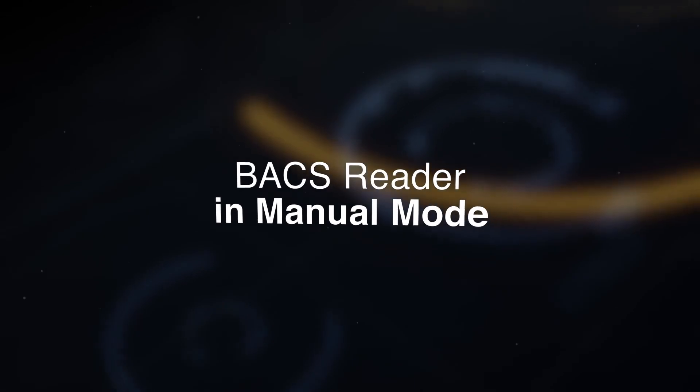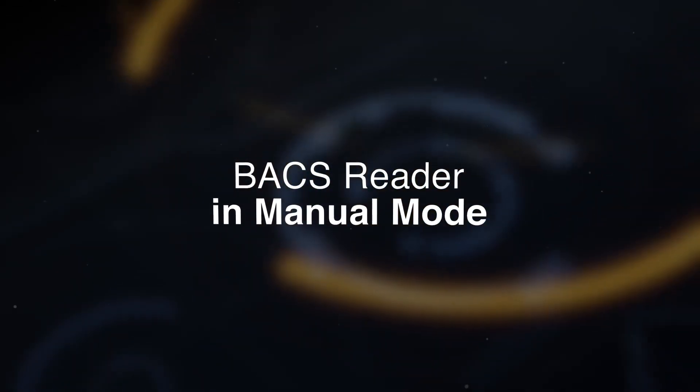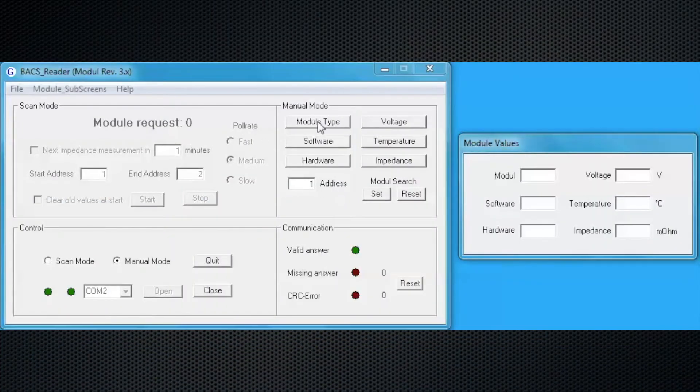This is showing how to use the Bax reader software in the manual mode. In this mode you can pull module types, software, and hardware, voltage, temperature, impedance for one battery only. You can also set a module search for the battery you're pulling.